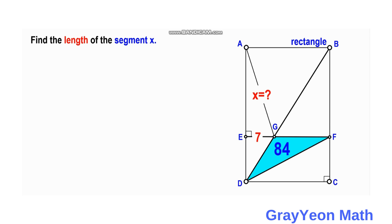First, we focus on the 84 square unit triangle. Let's say the length GF is small letter A, and the height FC is small letter B. Since EF is a horizontal line, this height is also B on the other side.